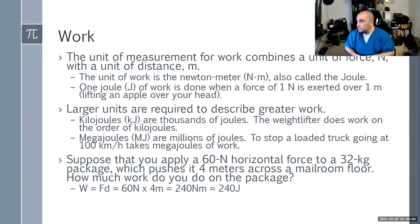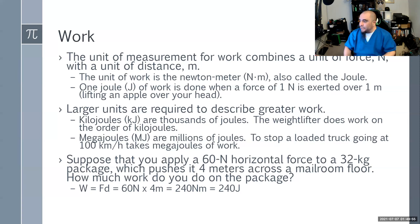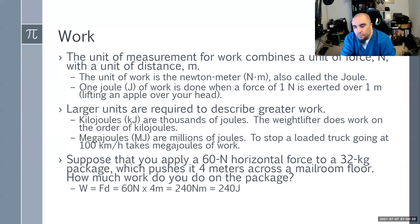One joule of work is done when you lift one newton over one meter, such as lifting an apple over your head. Larger units include kilojoules and megajoules — stopping a loaded tractor-trailer at 100 km/h requires megajoules of work. For example: applying a 60-newton horizontal force to push a 30-kilogram package across 4 meters of floor — work = 60 N × 4 m = 240 newton-meters, or 240 joules.